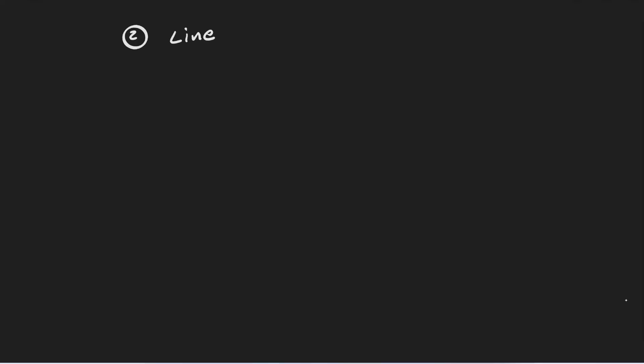Let's discuss something more interesting, which is a line. So how exactly do we define a line? Let's visualize it. Here we have a standard line. One thing to notice is that lines have infinite length, and that's the reason why we have those arrows on the left and the right-hand side.